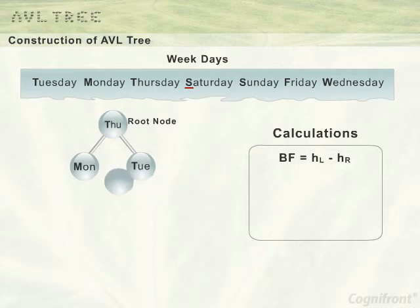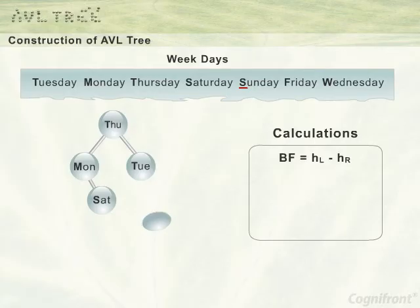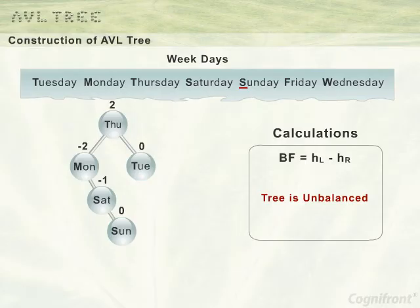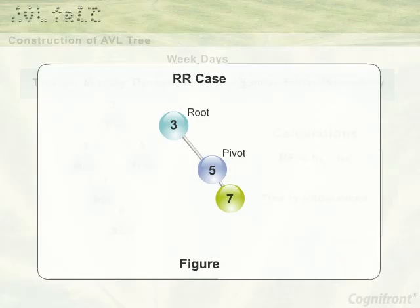Next is Saturday, which is inserted to the right side of Monday. The tree is balanced. Next is Sunday, which is inserted as the right subtree of Saturday. Now the balance factor of Thursday is 2 and that of Monday is minus 2, so the tree is imbalanced. Since Monday is the nearest ancestor with BF of minus 2, the rotation will be performed around it. As Sunday is inserted to the right subtree of Monday and to the right subtree of Saturday, the rotation to be performed is RR.